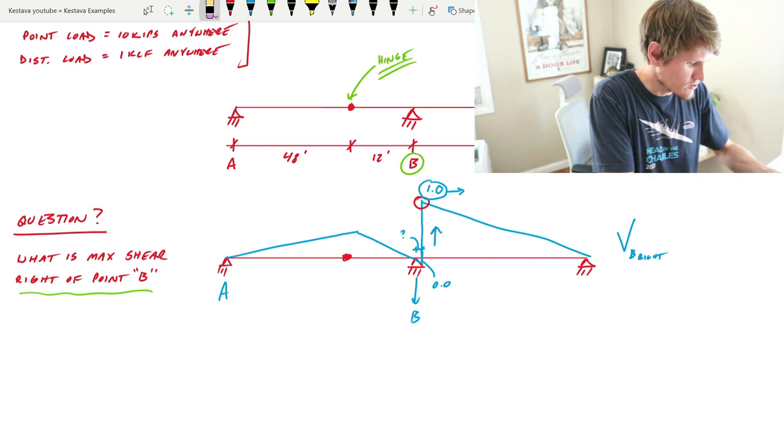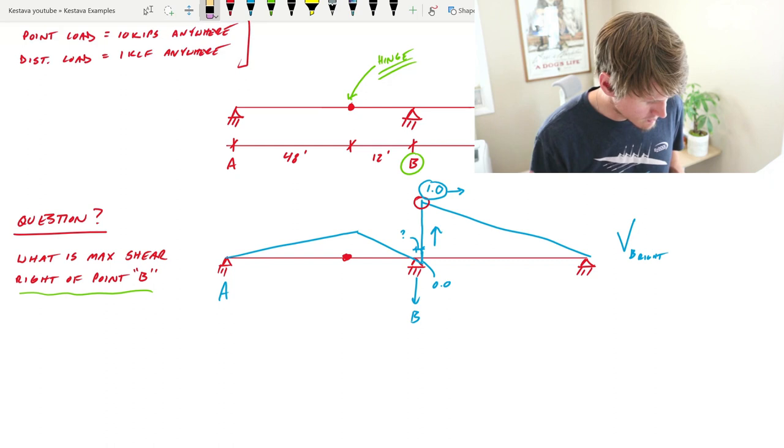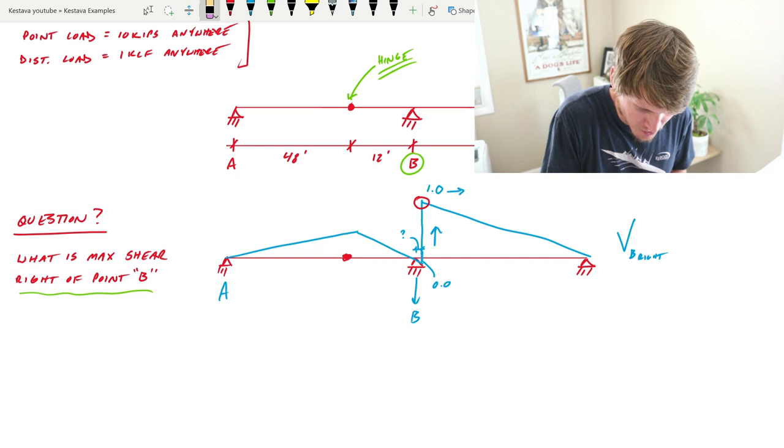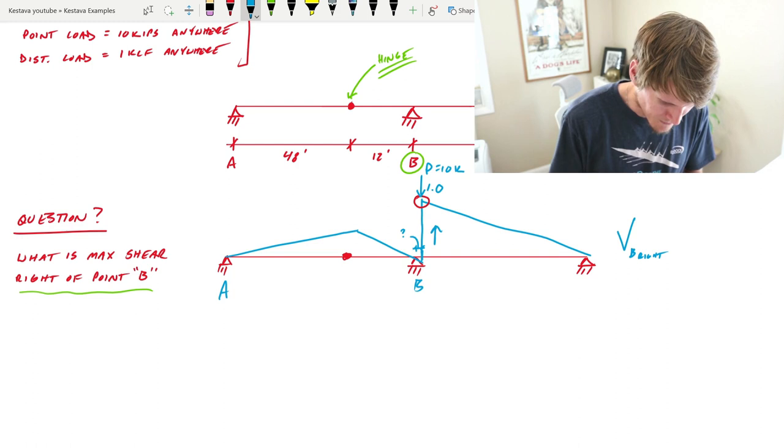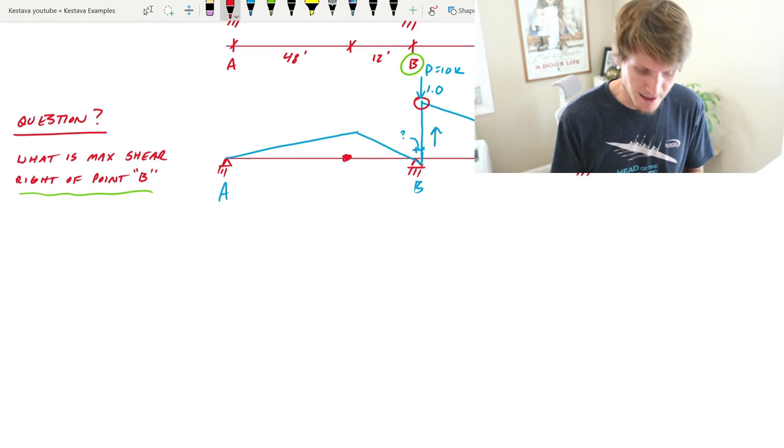But how do we use this to our advantage? Well, shear due to the point load is greatest at the largest area factor, which for us is the 1.0 at the top. So we know that when our point load P equals 10 kips is located right there, that's when we get our largest shear. And how do we calculate that number?